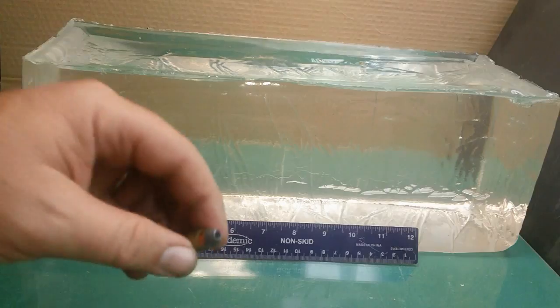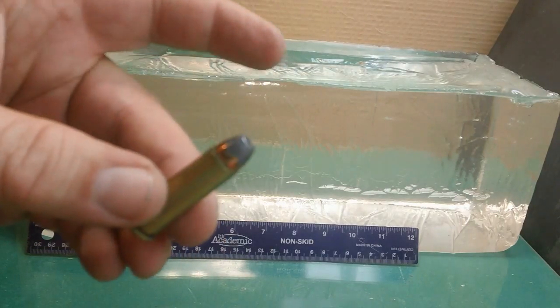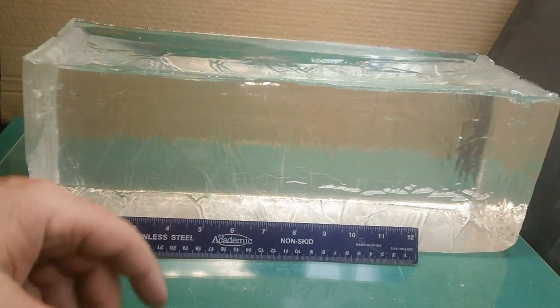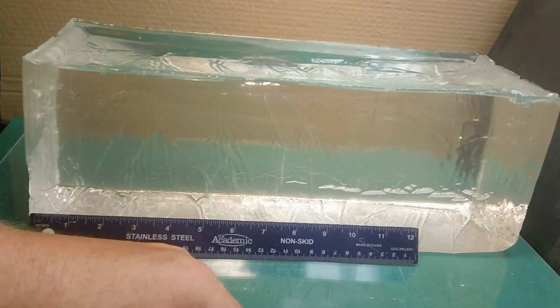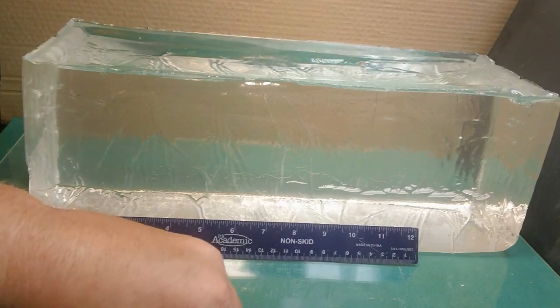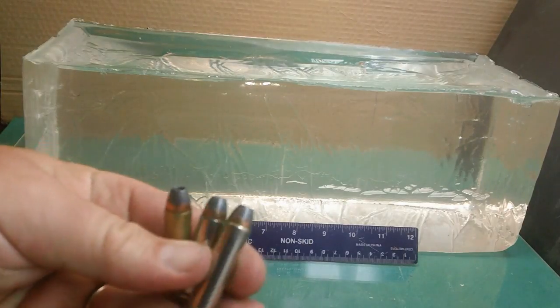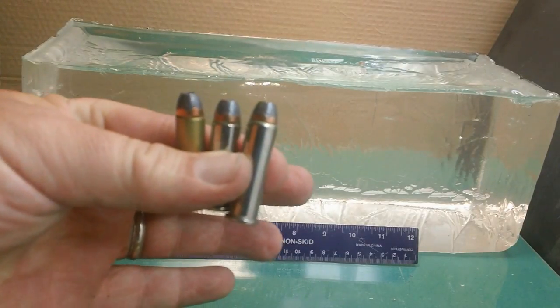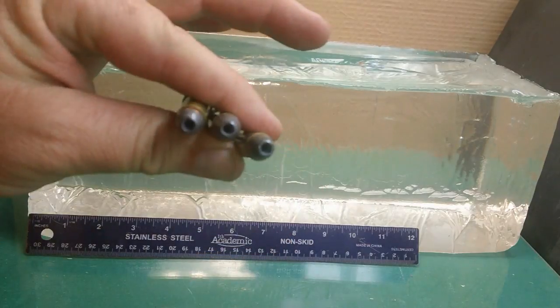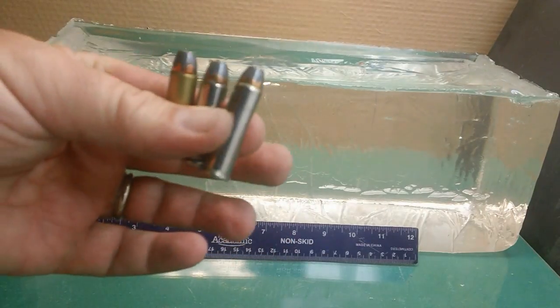So they're all the same 125 grain bullet and it's all the same manufacturer, Remington. The only difference is the 38 special, the plus P, and the Magnum. What kind of penetration difference can you expect between these three?